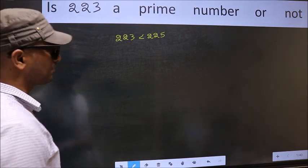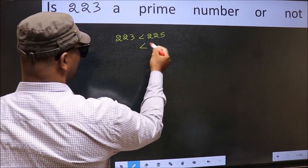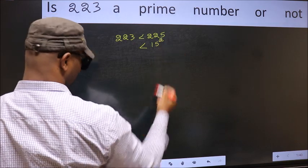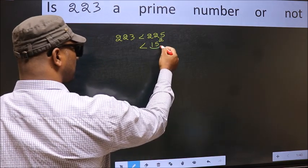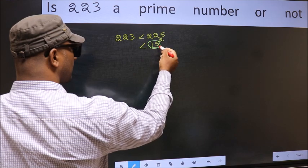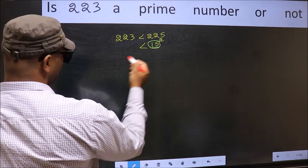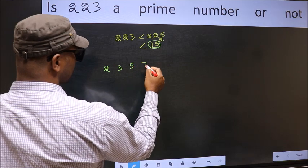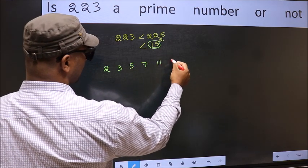Next, 225 is nothing but 15 square. Now you write all the prime numbers less than this number 15. They are 2, 3, 5, 7, 11, and 13.